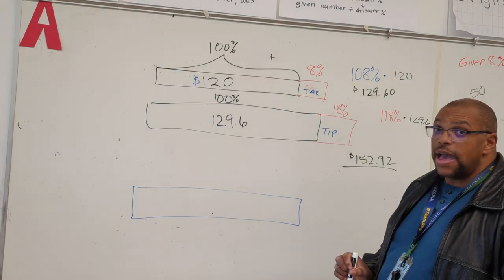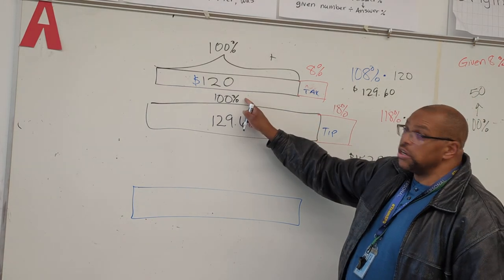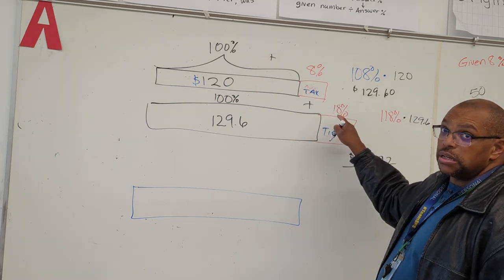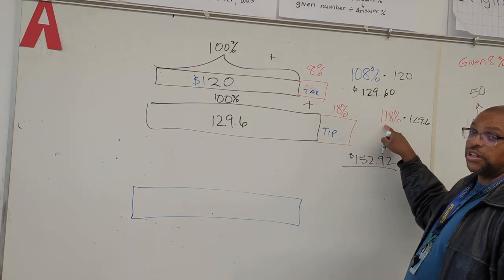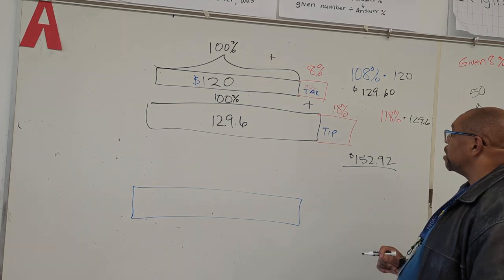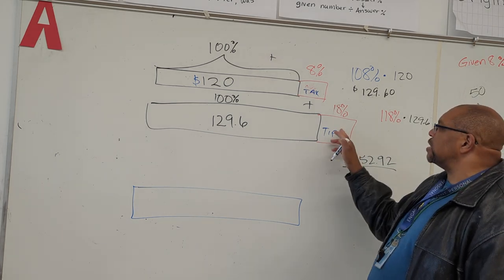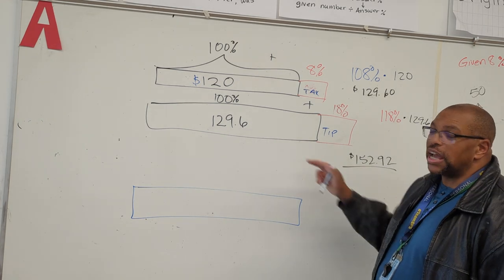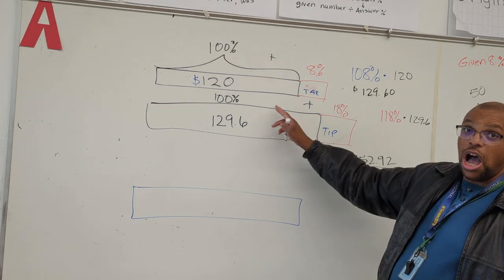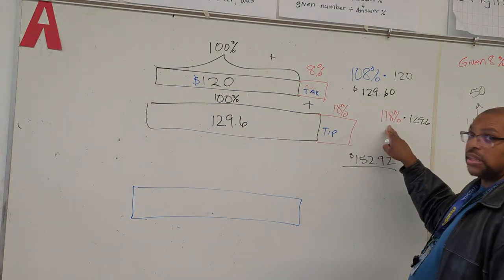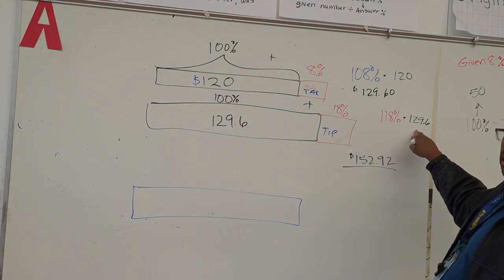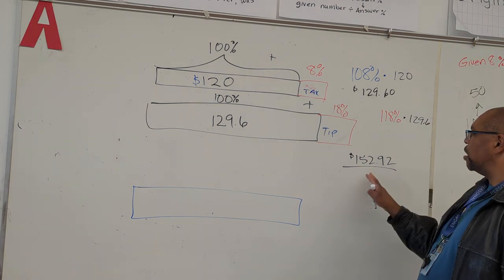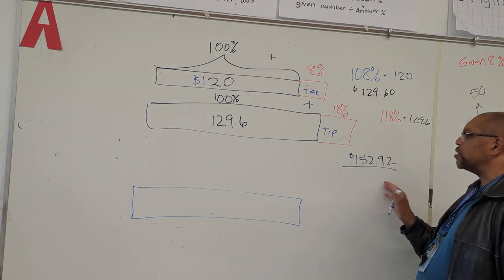So once you do that again, 100% plus 18% gives us 118%. And since we don't know what this is, if we multiply the 118% by the 129.6, which is our new 100%, we get this problem here. When you multiply this out, you get $152.92.